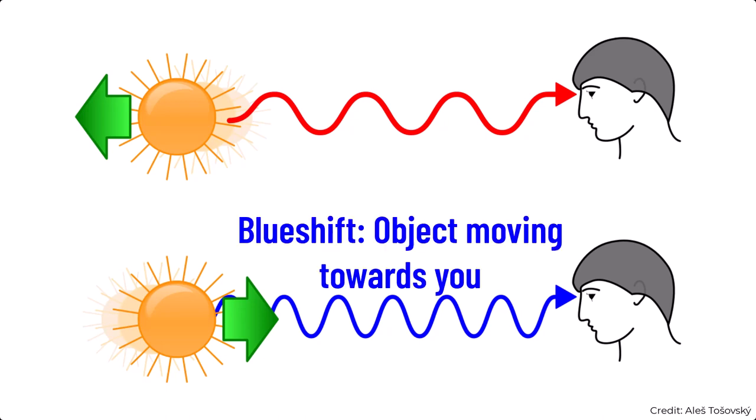When the light source is moving away from us, it gets shifted to the red end as its wavelength increases and frequency decreases, which of course we call redshift.